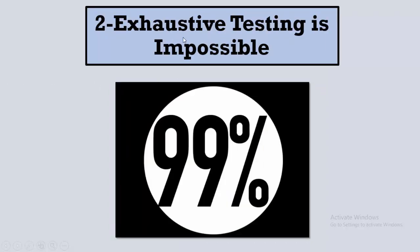The second principle is: exhaustive testing is impossible. You can't test everything — the combinations are infinite. So you try to perform most of the testing and cover a big percentage of functionalities or risks, but you can't cover all the functionalities, all the risks, or all the scenarios that the user will perform when using the software.